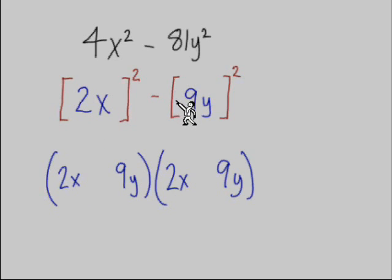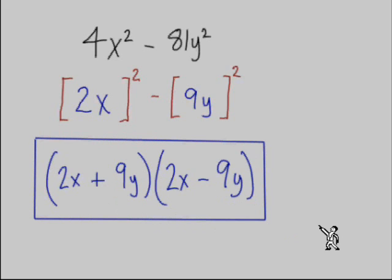Each set of parentheses is going to end with 9y. One will get a plus, one will get a minus, and it's factored. Now, just like any other factoring problem, we can check our answer using FOIL method.